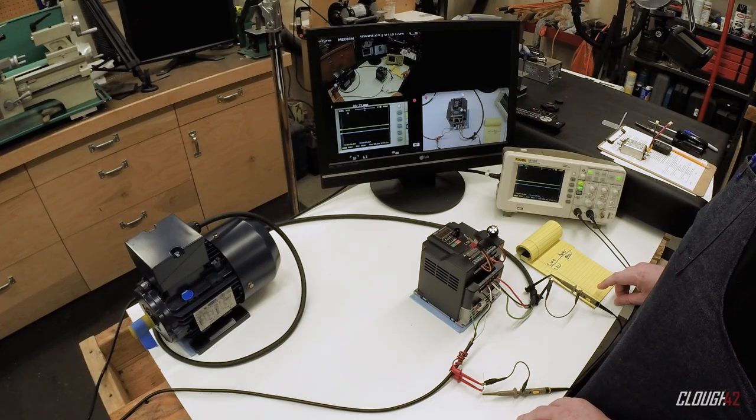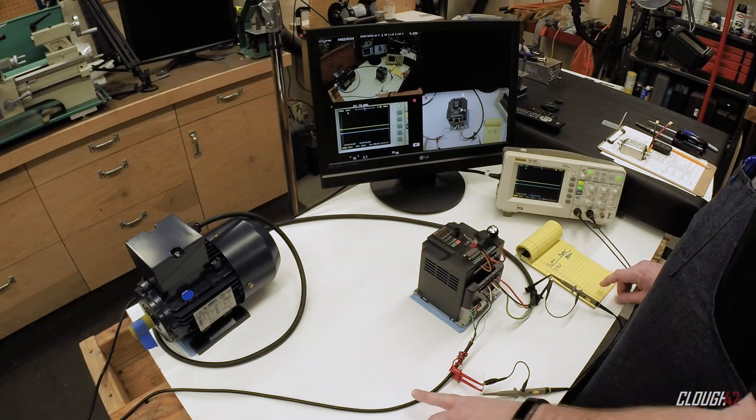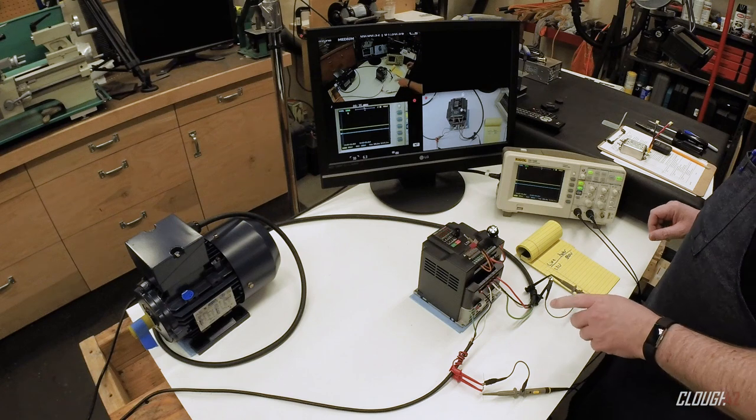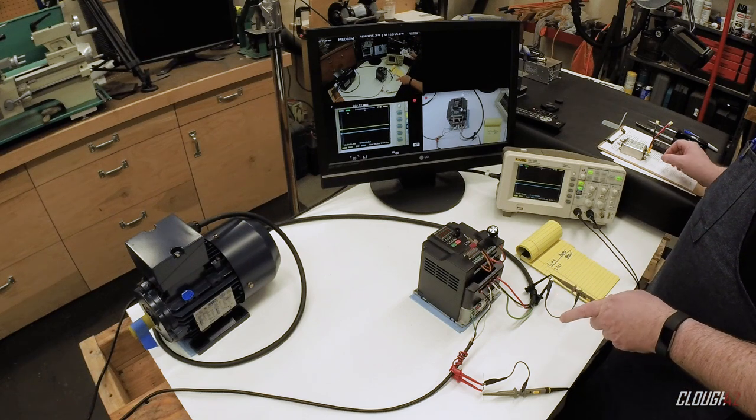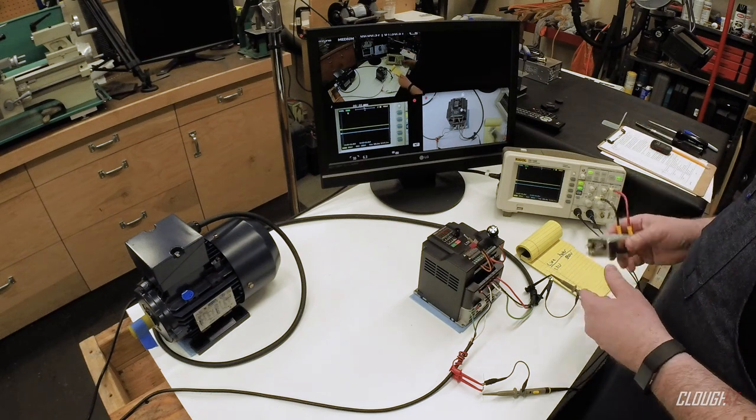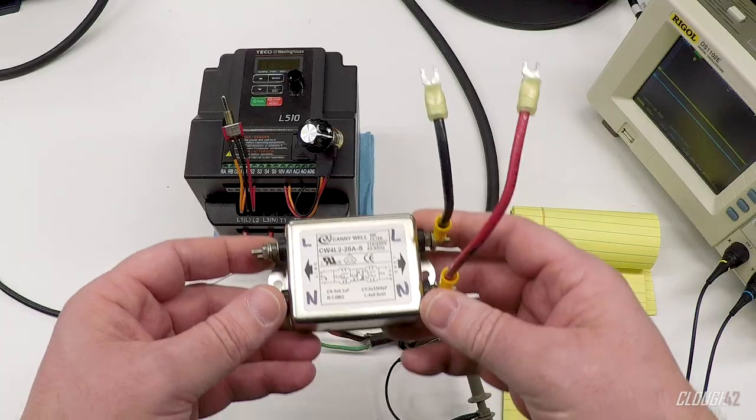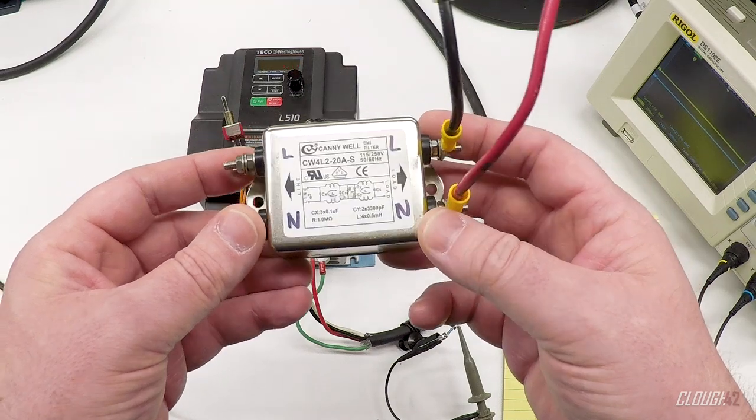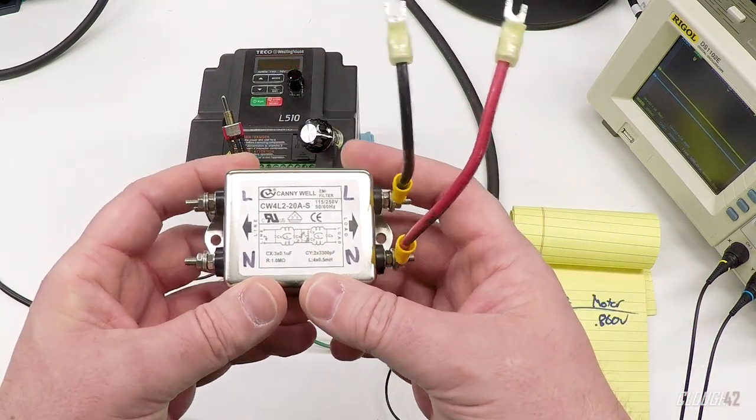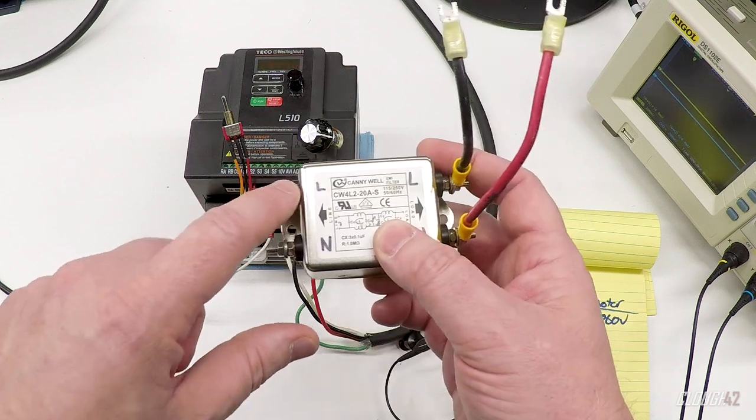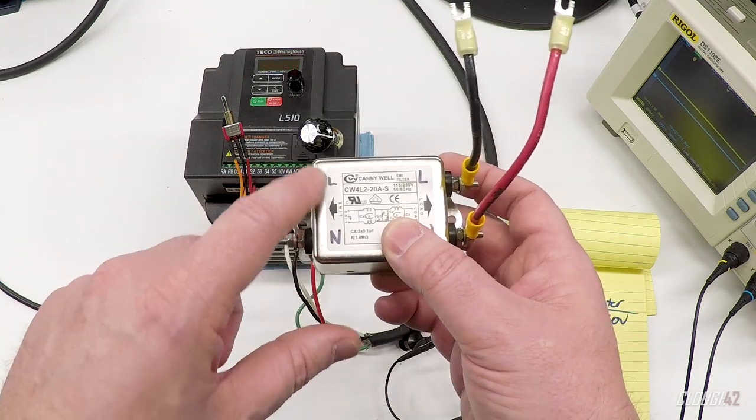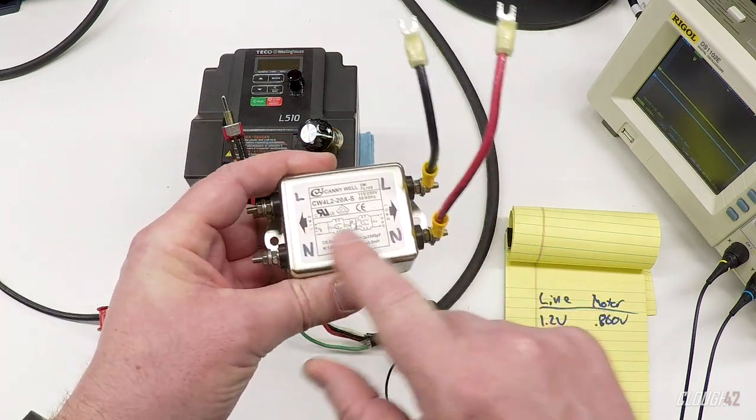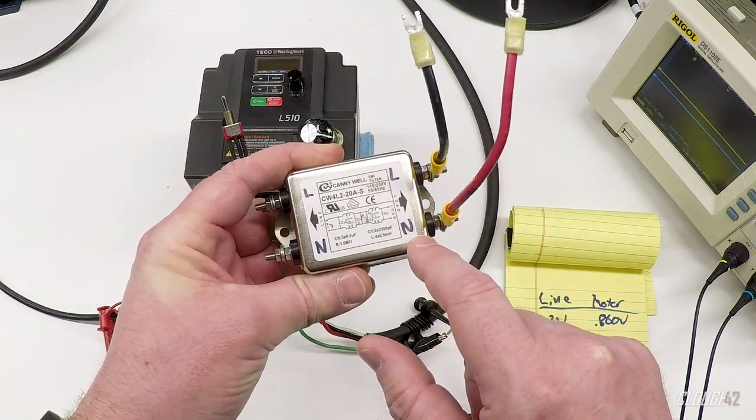I think our biggest problem here is probably the conducted noise traveling back up the line and interfering with the monitor. So let's start by trying to deal with that. The easiest way to deal with conducted noise is just to use a filter. And this is a filter that I bought. I got this one on Amazon. There'll be a link down below if you're interested. And this is a common line noise filter.